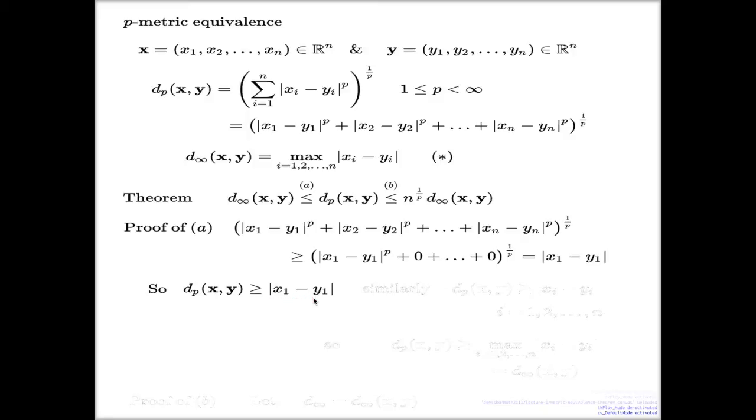Well basically nothing stops me from vanishing every component except the second one and concluding the similar statement for the difference of second components, and then difference of third components and all of the other components, right? So basically I can say that, repeating the argument similarly, I can say that dp metric of x and y is greater or equal than the difference of any other i component, where i takes any value 1, 2, and n.